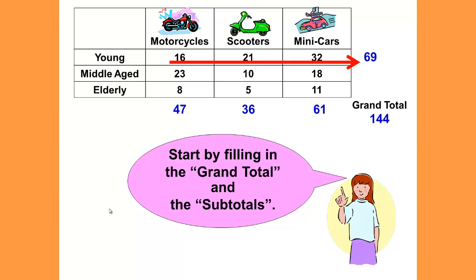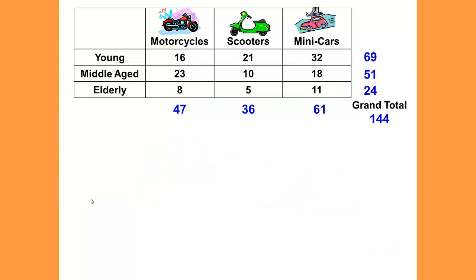Then I can also add up each age group for my subtotal. 16 plus 21 plus 32 gives me a subtotal of 69 young people. 23 plus 10 plus 18 gives me 51 middle-aged adults. 8 plus 5 plus 11 gives me 24 elderly adults. And if I added 69 plus 51 plus 24, that should also give me a grand total of 144.